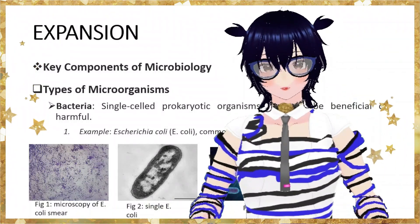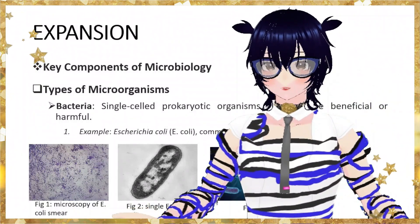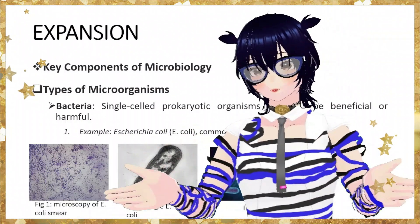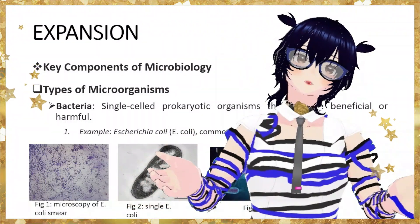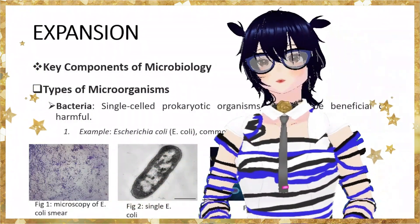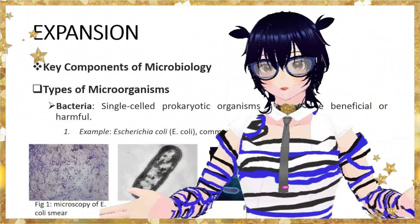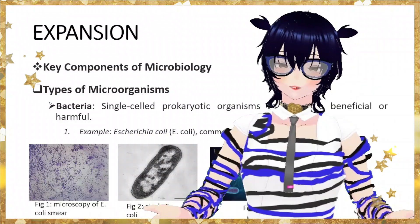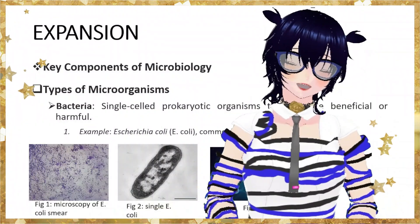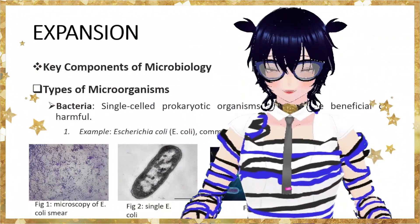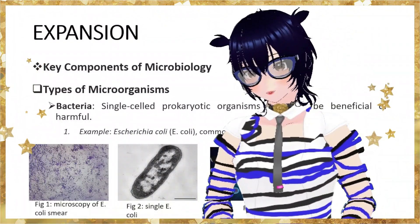The bacterial cell doesn't have a coating around its genetic material. Bacteria can be beneficial and can be harmful — there's a bad side and a good side to everything in this world, just like light and shadow.